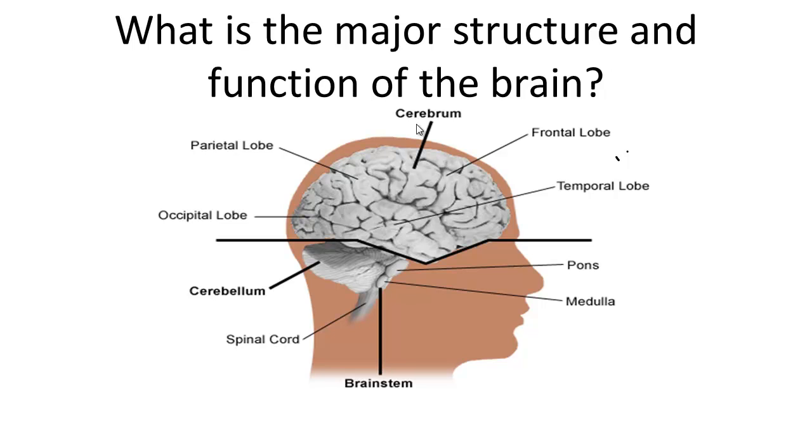The brain can be divided into many parts, including the cerebrum, cerebellum, medulla oblongata, pons, hypothalamus, thalamus, and more.